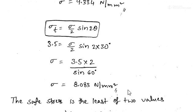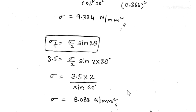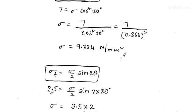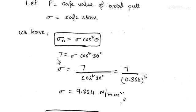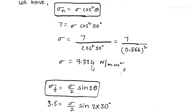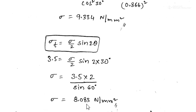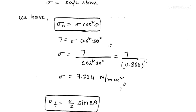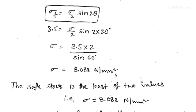We now decide the safe stress value, which will be the least of these two values. If we take 9.334 N/mm² as safe stress, it satisfies the normal stress criterion but not the shear stress criterion. If we take 8.083 N/mm², it satisfies both the shear stress and normal stress criteria — the values stay within the permissible limits. So the safe stress value is σ = 8.083 N/mm².